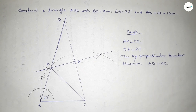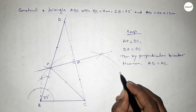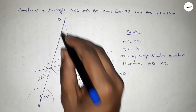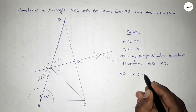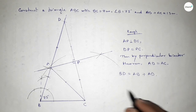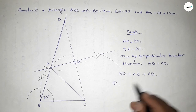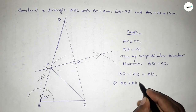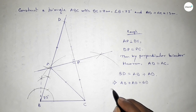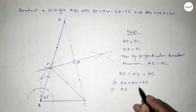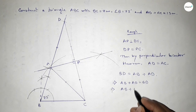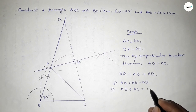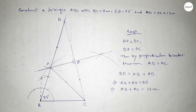Now BD equals BA plus AD. Since AD equals AC, we can replace AD with AC: BD equals AB plus AC equals 13 centimeters. That completes the proof.